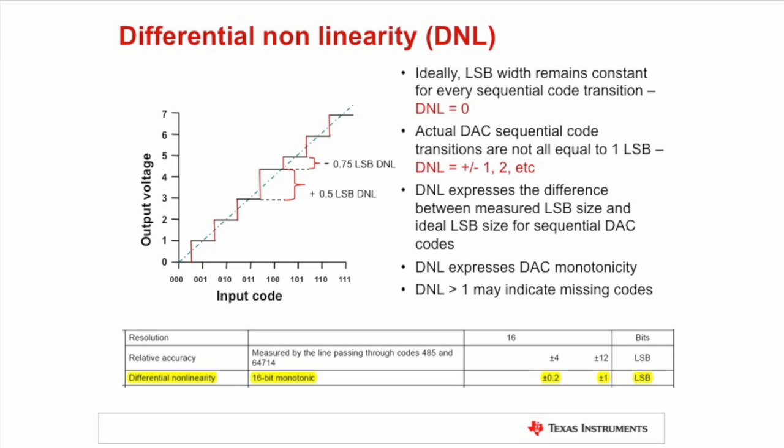If DNL at any transition were greater than 1, it may mean that the DAC has missing codes. Most modern DACs are monotonic and have no missing codes, but you should always double check in the datasheet.